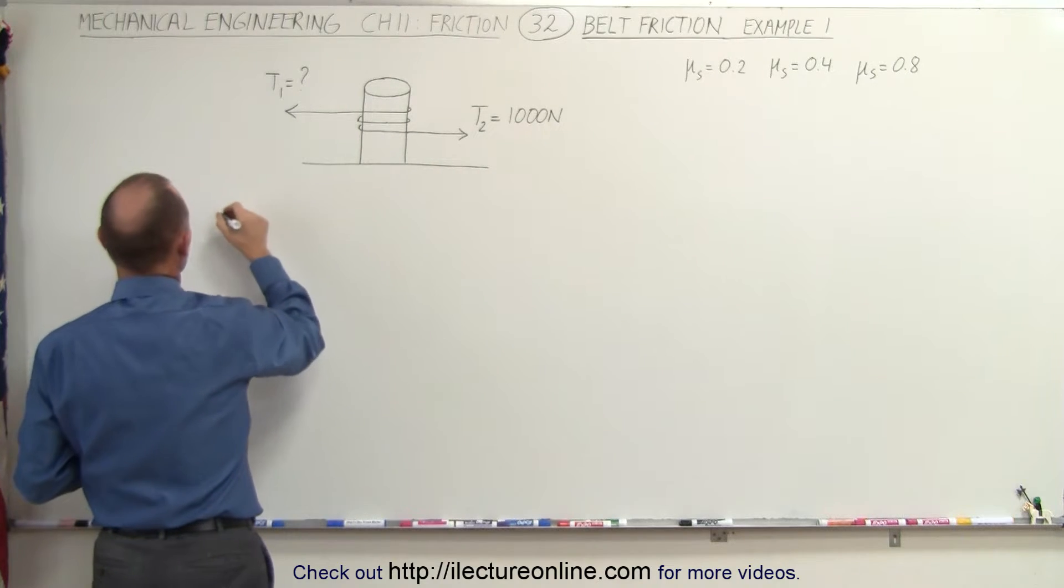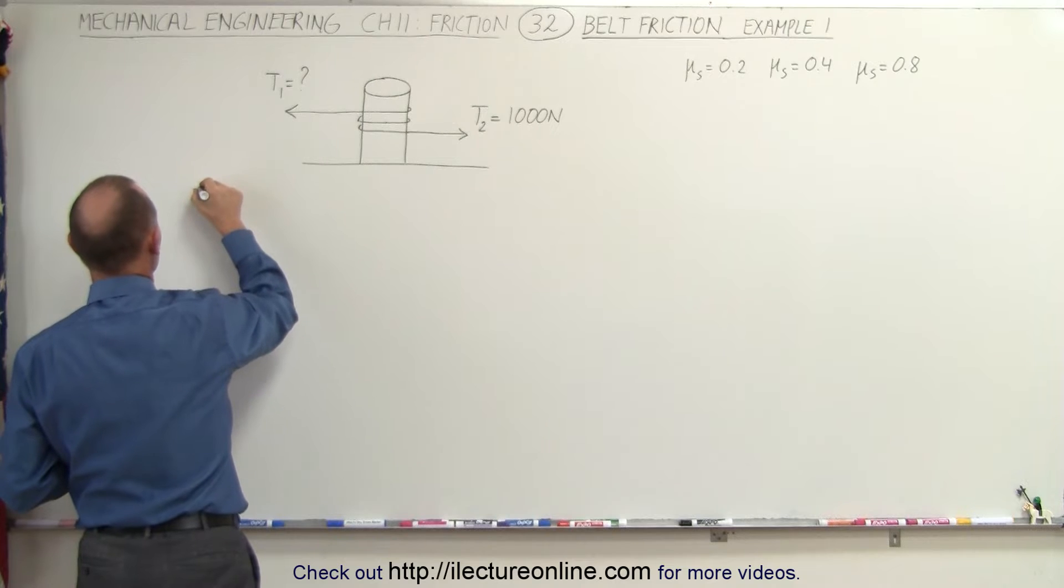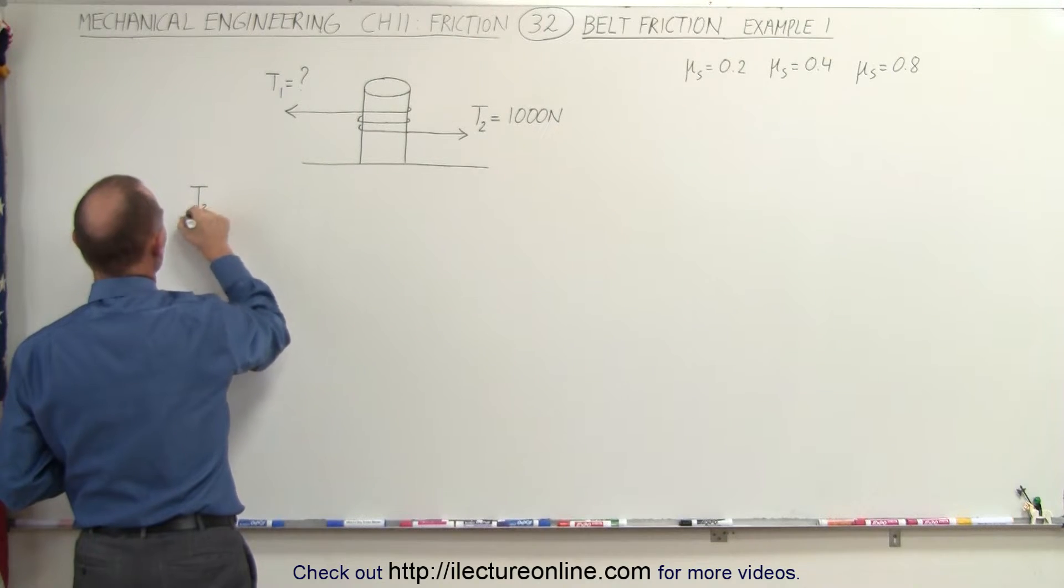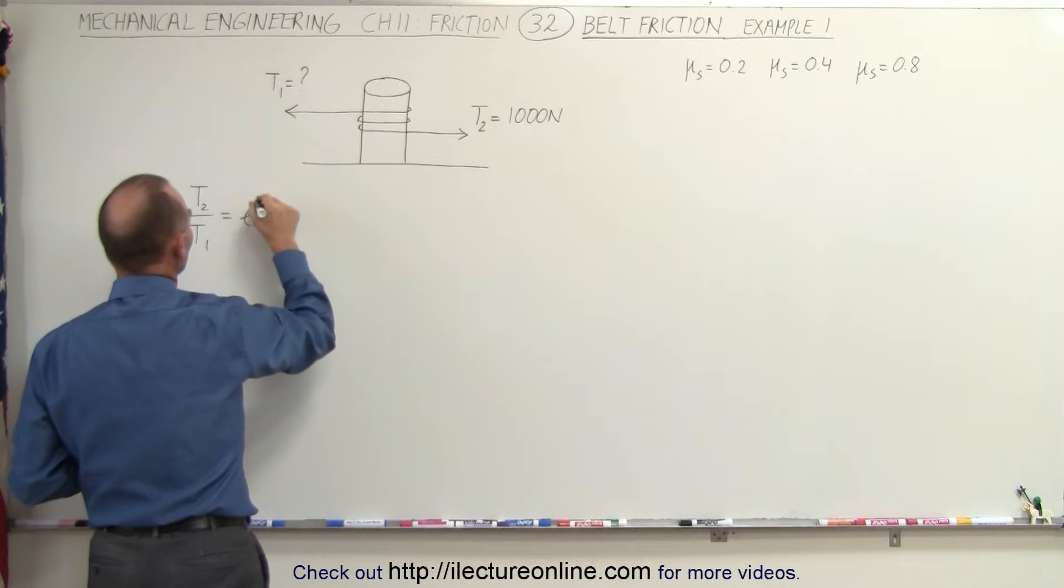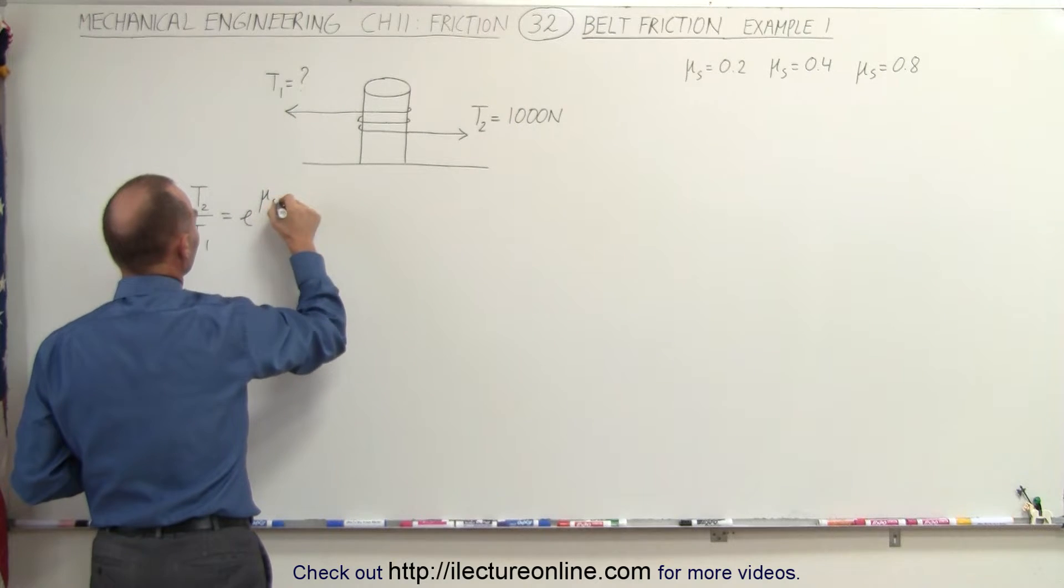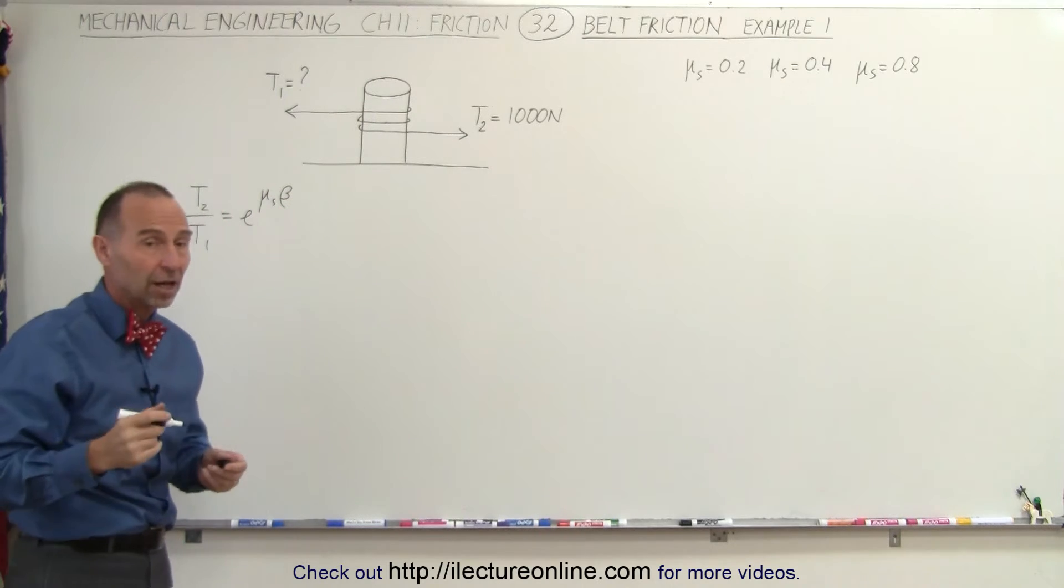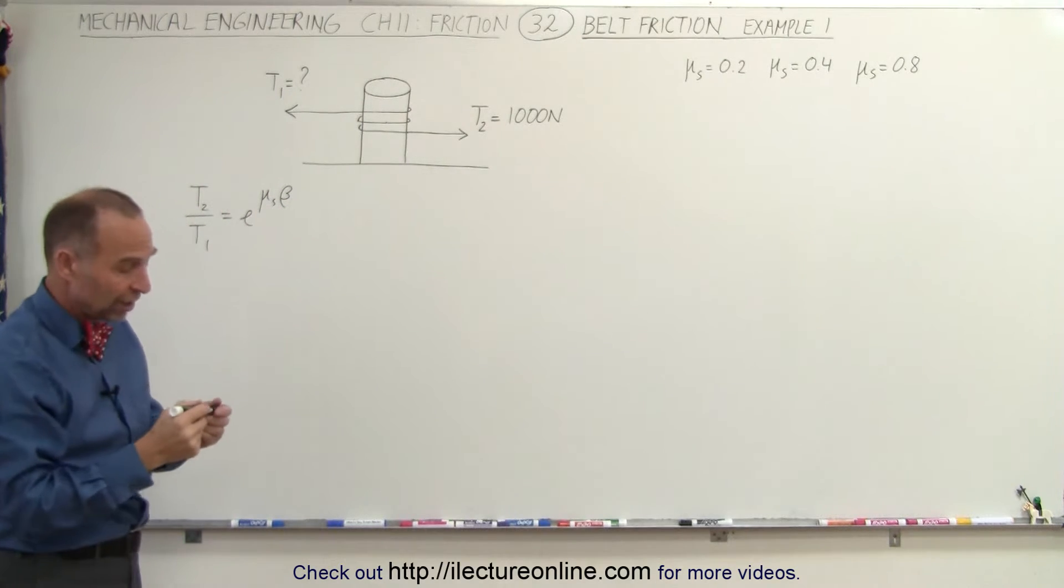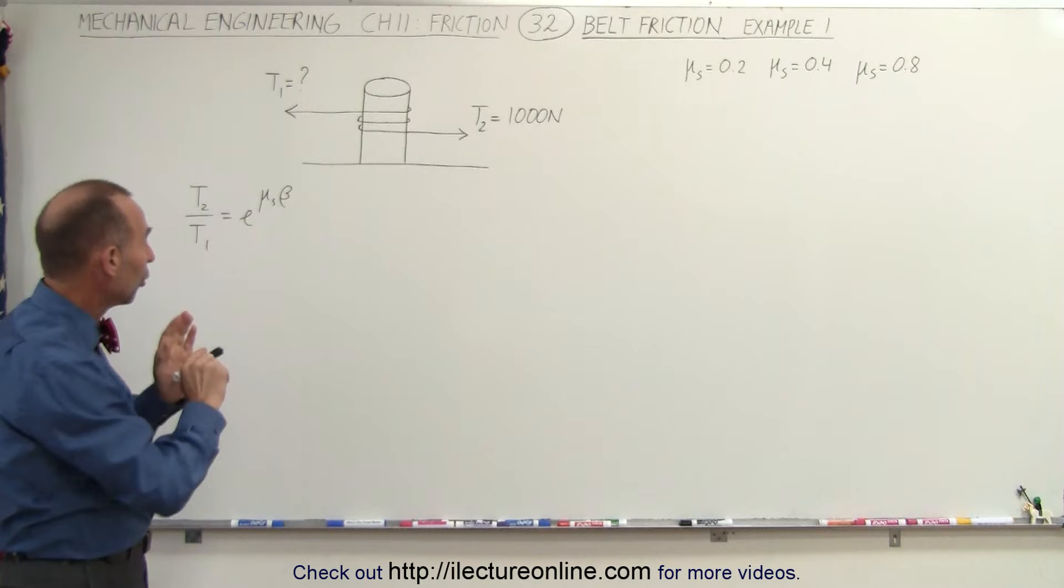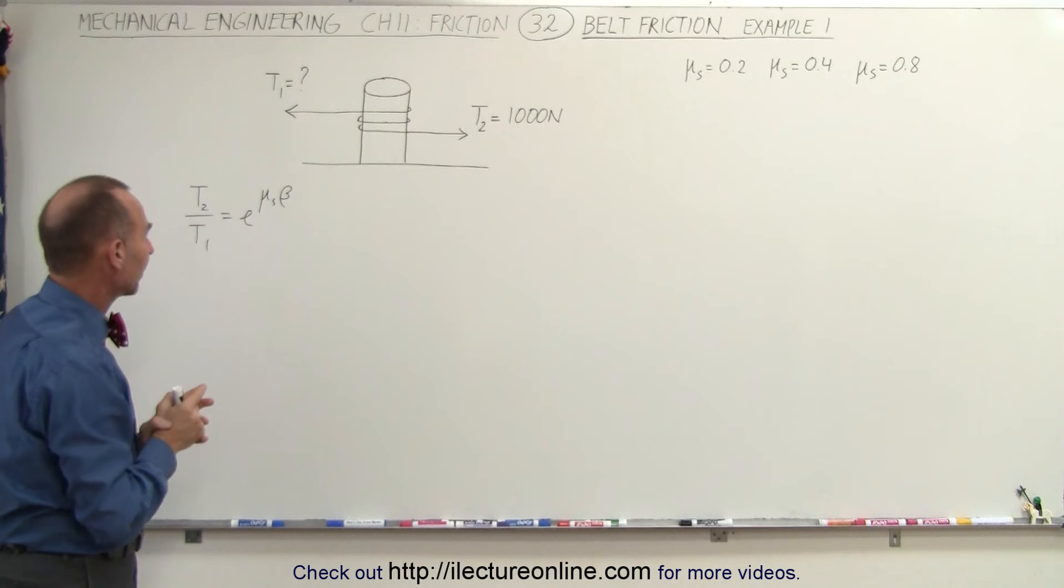So what we can say here is that the equation we found on the previous video, T2 divided by T1 is equal to e raised to the coefficient of static friction times the angle of contact. So in this case the angle of contact would be two complete rotations that would be twice 2π or a total angle of 4π radians of contact.